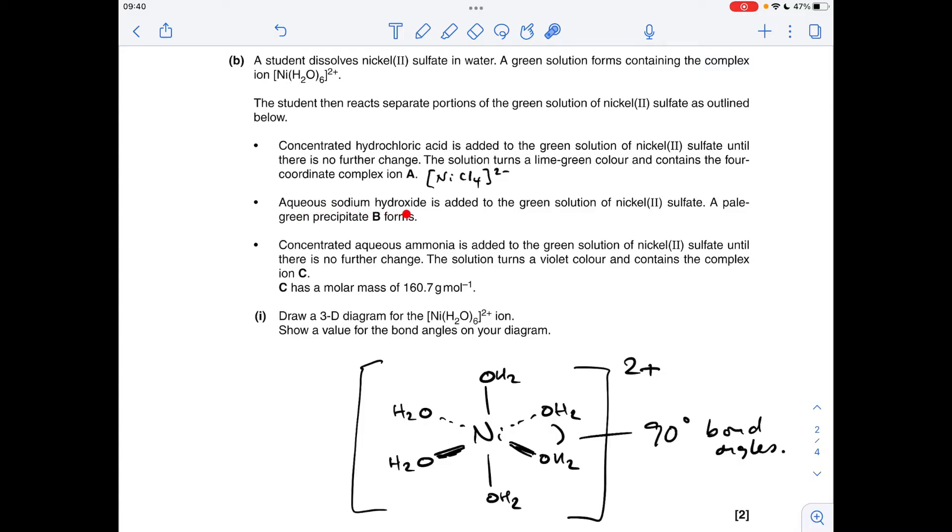Next bullet point: aqueous sodium hydroxide is added to the green solution of nickel 2 sulfate, and a pale green precipitate forms. This is going to be a hydroxide precipitate of nickel, and because it's 2+, it's going to be Ni(OH)₂, or you can give the full formula Ni(OH)₂(H₂O)₄. The third bullet point: we're adding concentrated aqueous ammonia to the hexa-aqua nickel 2 ion until there's no further change. The most important information is we've got the MR of the complex C, which is 160.7.